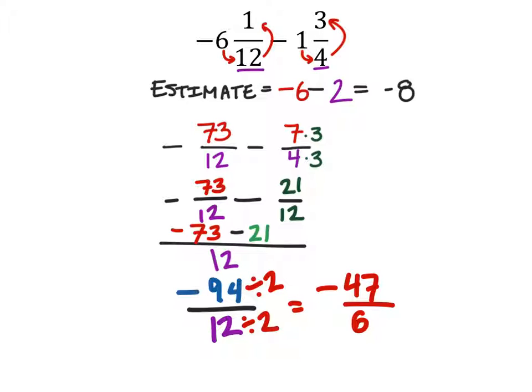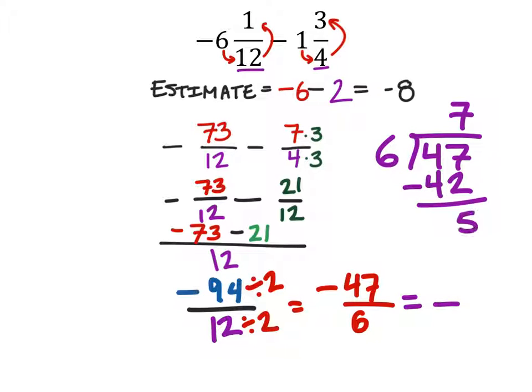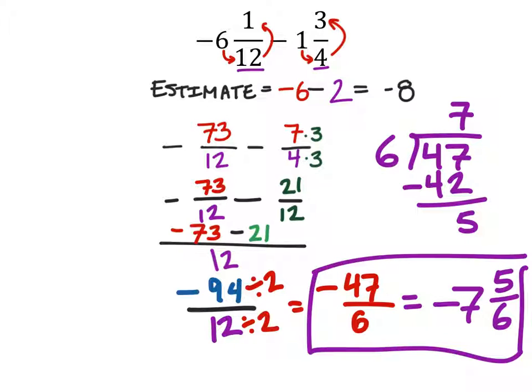But I think in the homework they want you to change this into a mixed number. It's still going to be negative so let's focus on just the numbers. I've got 47 divided by 6. 6 will go into 47 seven times. 7 times 6 is 42 so when I subtract I have 5 remaining so I have 7 and 5/6. So depending on who your professor is or your teacher one of these two answers will work and they are equivalent so maybe they'll even accept both.